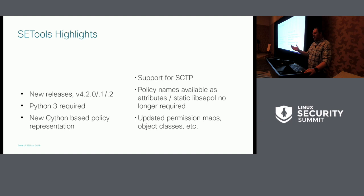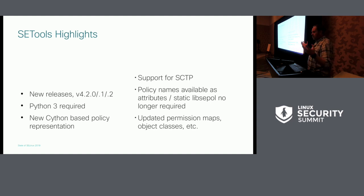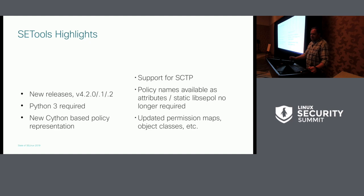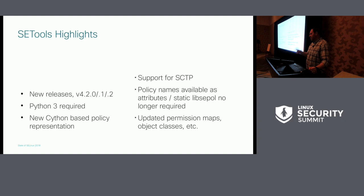SELinux tools — if you're not aware of what they are, they're not part of the main SELinux user space, but they're a great little thing for doing analysis and various other things with the policy. There were multiple new releases; the 4.2 was the big release, and then there were follow-on updates, .1 and .2. This is kind of leading the way: now you actually have to have Python 3 to build SELinux tools. That change is also coming to SELinux user space pretty soon because Python 2 dies in January or February — I forget the exact date. SELinux tools has moved over to a Cython-based policy representation. They added support for SCTP, policy names are available as attributes now in the language — the big thing there is that you no longer need a static build of libsepol — and of course the usual updates for the permission mapping, object classes and whatnot.